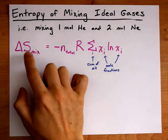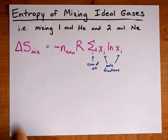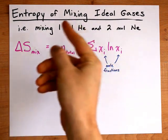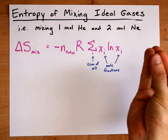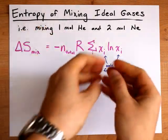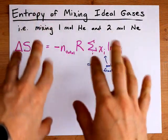Did you know you can calculate the entropy of mixing ideal gases? Entropy is a measure of the disorder of a system. So if you start with one mole of pure helium and two moles of pure neon, and then mix the two, all of a sudden you have different types of atoms, helium and neon, in the same container, there's a little more disorder,